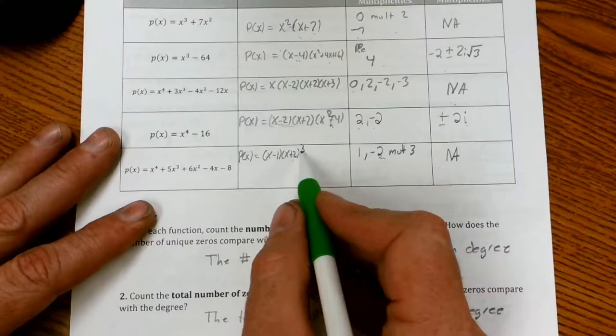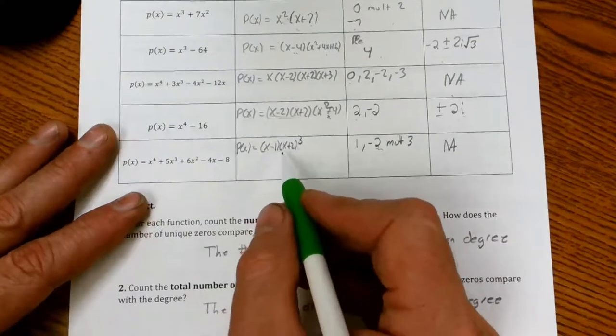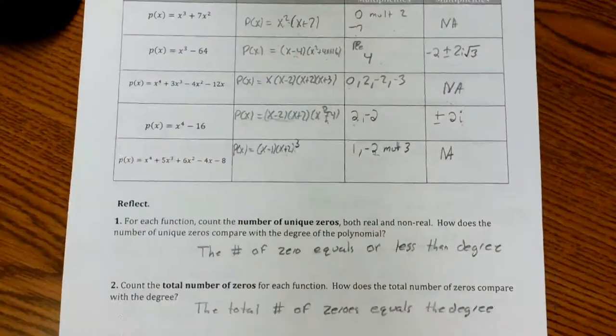It's going to be a pretty short video. We'll get through page two. What we want to know is the number of unique zeros, and that's not without multiplicity. These zeros are equal to or less than the degree is what we're saying.